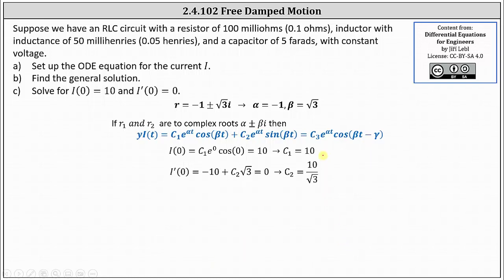Now that we know c₁ equals 10 and c₂ equals 10 divided by square root three, we know the particular solution. I(t) equals 10 e^(−t) cos(√3·t) plus (10 divided by square root three) e^(−t) sin(√3·t). I hope you found this helpful.